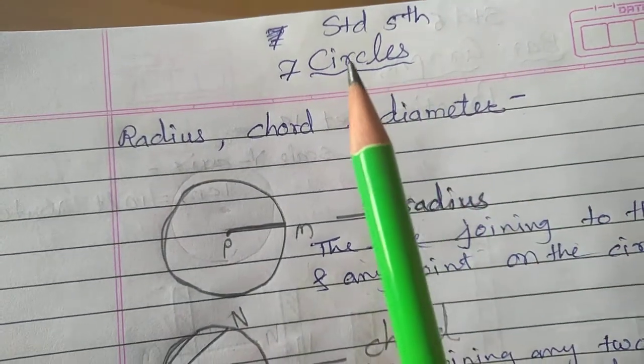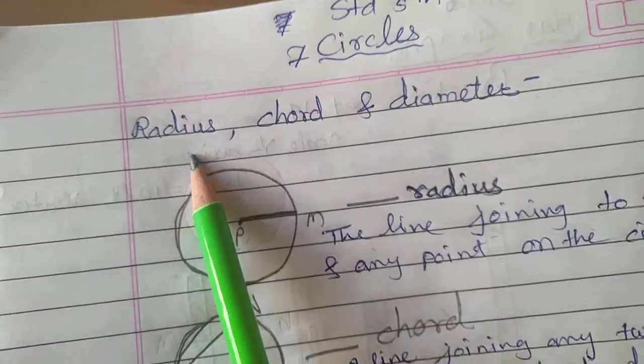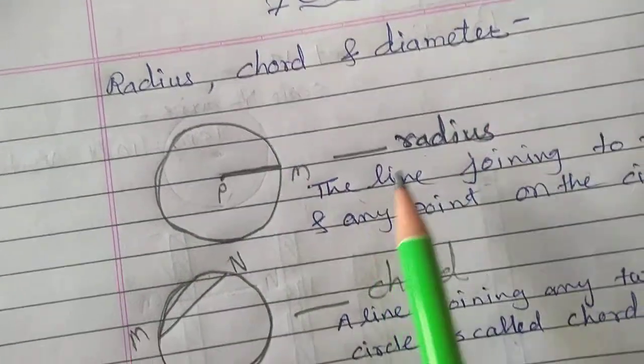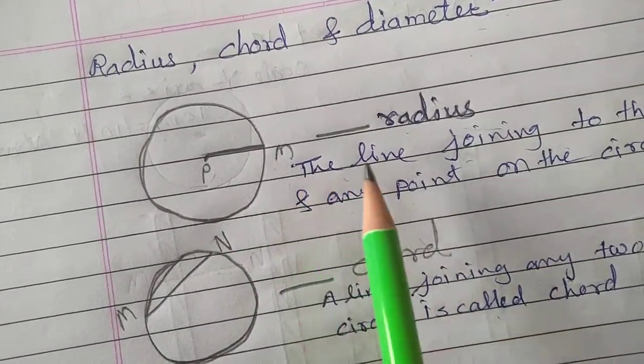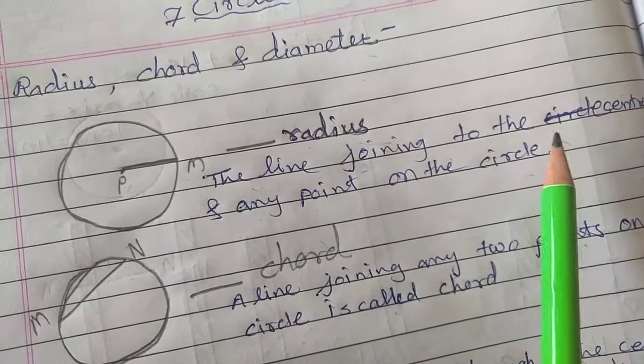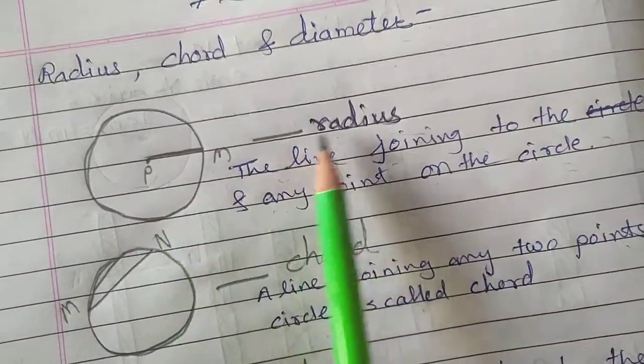Welcome to the next video of standard 5th lesson number 7: circle, radius, chord and diameter. Here, radius PM is the radius of the circle. The line joining the center and any point on the circle is called radius.